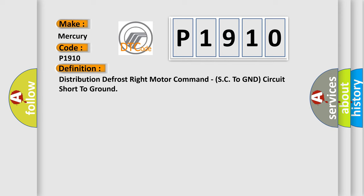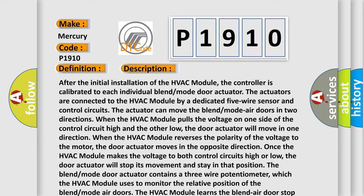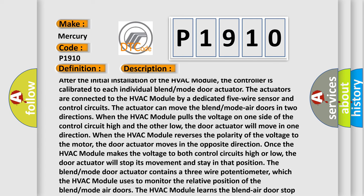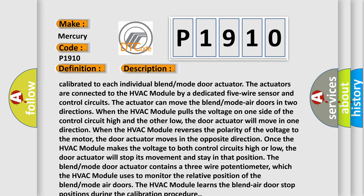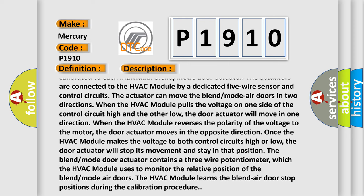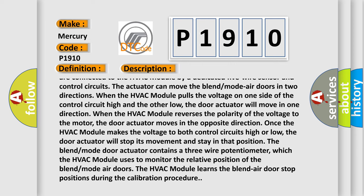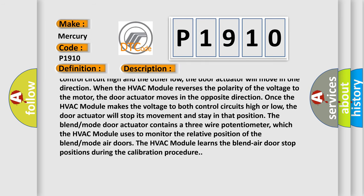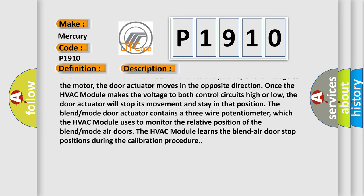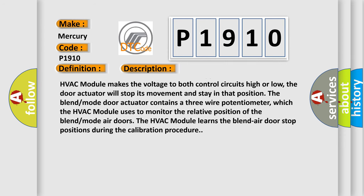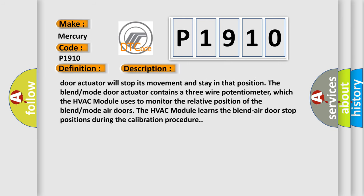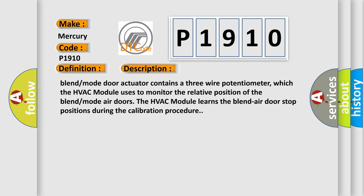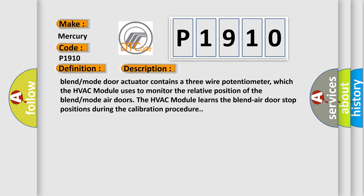After the initial installation of the HVAC module, the controller is calibrated to each individual blend mode door actuator. The actuators are connected to the HVAC module by a dedicated five-wire sensor and control circuits. The actuator can move the blend mode air doors in two directions when the HVAC module pulls the voltage on one side of the control circuit high and the other low. When the HVAC module reverses the polarity of the voltage to the motor, the door actuator moves in the opposite direction. Once the HVAC module makes the voltage to both control circuits high or low, the door actuator will stop and stay in that position. The blend mode door actuator contains a three-wire potentiometer, which the HVAC module uses to monitor the relative position of the blend mode air doors. The HVAC module learns the blend air door stop positions during the calibration procedure.